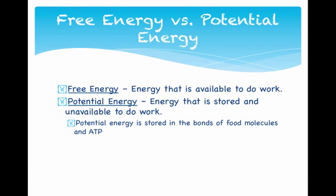There are two types of energy found in the universe: free energy, which is energy available to work with — things like heat and light — and potential energy. Potential energy is energy that is stored. In biology, energy is stored in bonds — the bonds in food molecules and in ATP. Remember: bonds are energy.